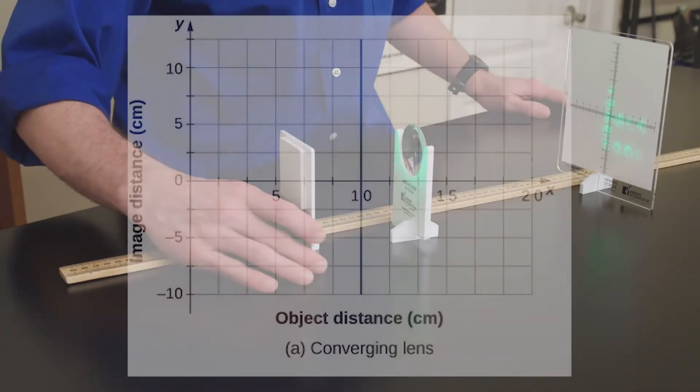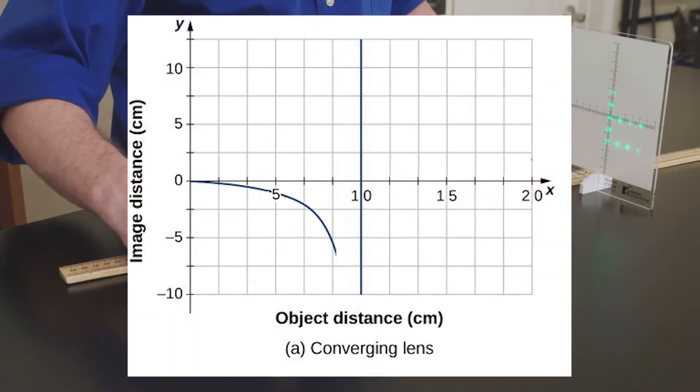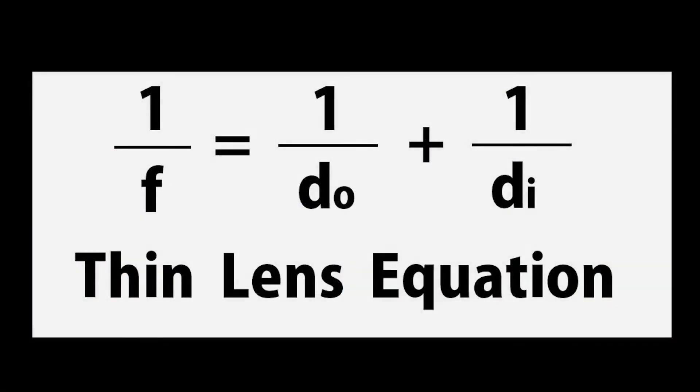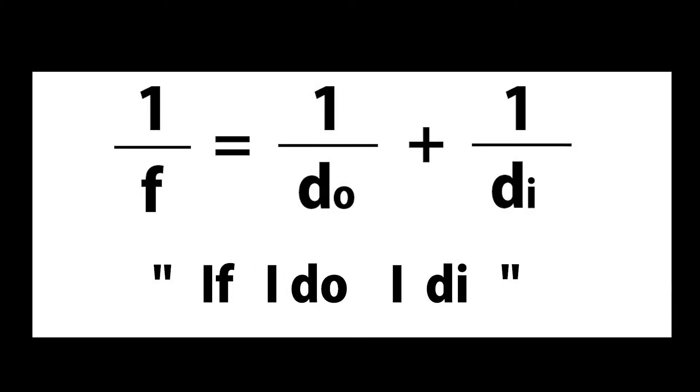For advanced students, you can graph the solutions to the thin lens equation. By the way, I call the thin lens equation the if-I-do-I-die formula. It's a helpful mnemonic that makes the lab more fun.